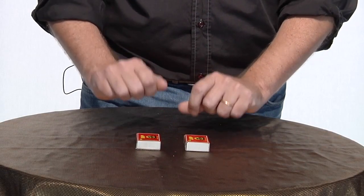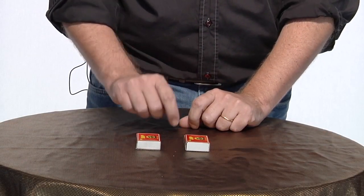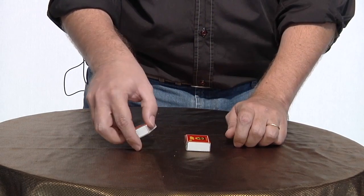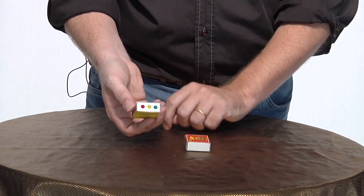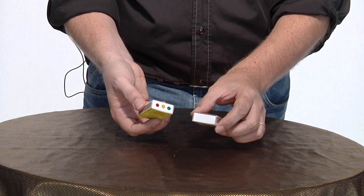Here I have two matchboxes that look the same, but they are not the same because on one side this matchbox has some dots and the other one does not have any dots.